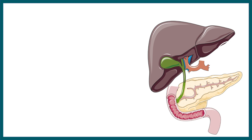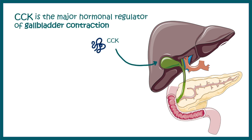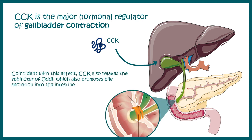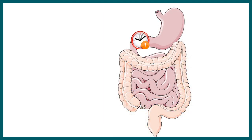CCK is a major hormonal regulator of gallbladder contraction. Gallbladder contraction can be evoked by neuronal or hormonal cues, and CCK is the major hormonal player. Consistent with this role, CCK also relaxes the sphincter of Oddi, helping to secrete bile into the duodenum.